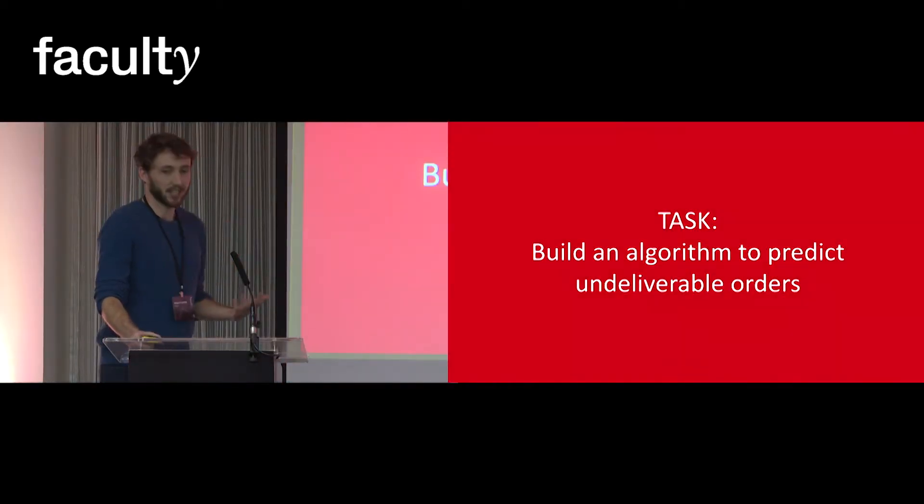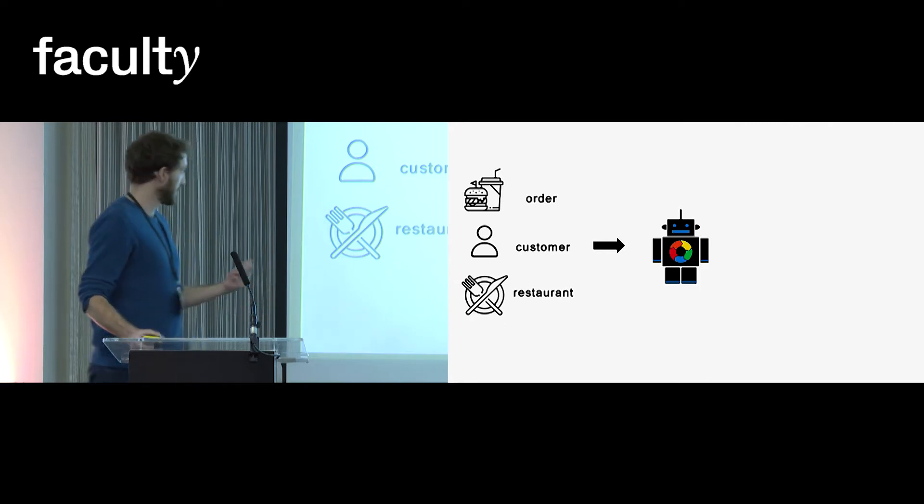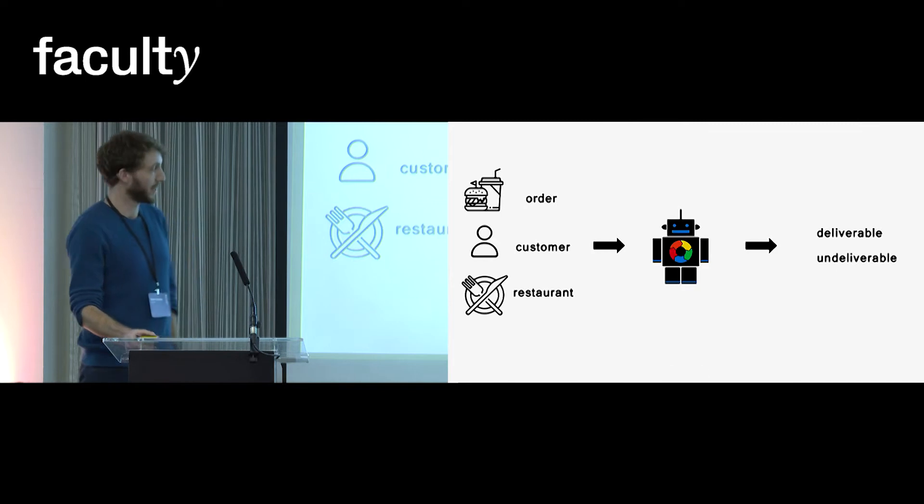So the task that JustEat sent me was to build an algorithm to predict these undeliverable orders regardless of what the cause was. So that's what I did. I built an algorithm that takes data about the order, data about the customer, data about the restaurant and predicts either deliverable or undeliverable.